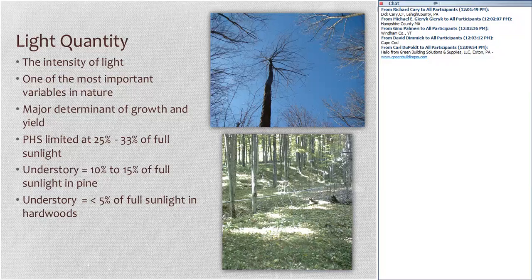Plants will need to be able to tolerate low levels of sunlight, or they'll be opportunistic. If a gap forms because a tree dies or a clump of trees die, then some plants are able to opportunistically take advantage of that sunlight.